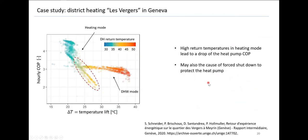One particularity of this district heating network is that it has two operating modes. During heating mode, the supply temperature is set to 50 degrees. Twice a day it switches to a domestic hot water mode for two hours, where the supply temperature is set up to 65 degrees to heat up the domestic hot water buffers in the buildings. The COP graph shows that in heating mode the return temperature is critical — higher return temperature means a higher temperature lift on the evaporator, a much lower COP, higher electricity demand, and sometimes the heat pump must be shut down for protection.